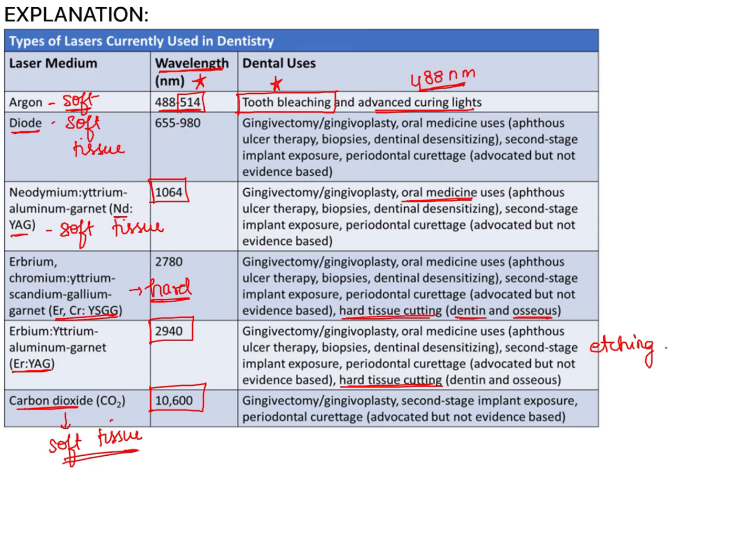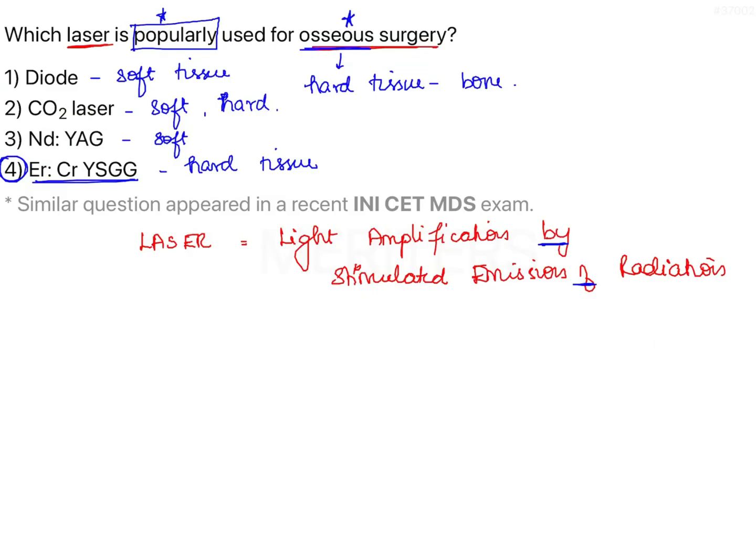These are important points to remember, especially the wavelength of each laser and whether it falls under the soft tissue or hard tissue laser category. Since the question asks about the laser used for osseous surgery — a hard tissue procedure — the correct answer is erbium chromium YSGG laser, that is option 4.